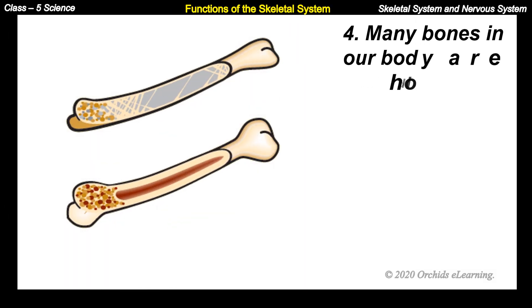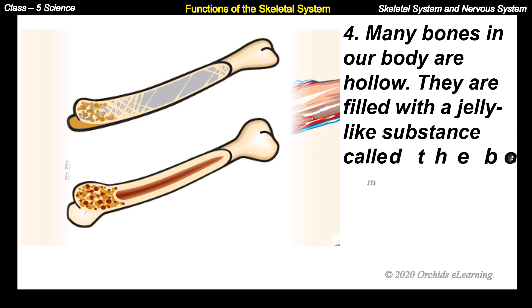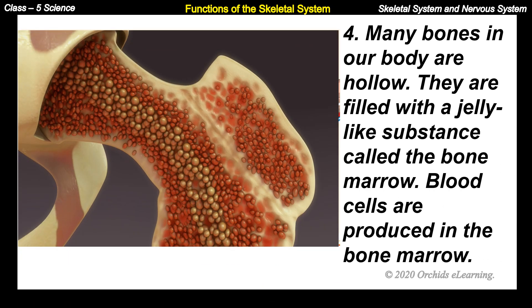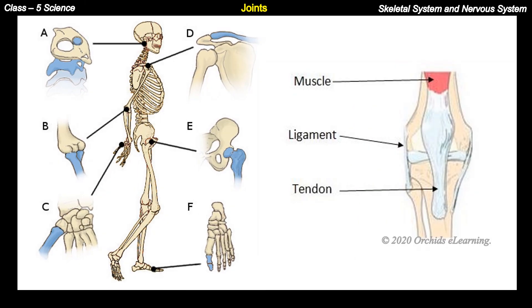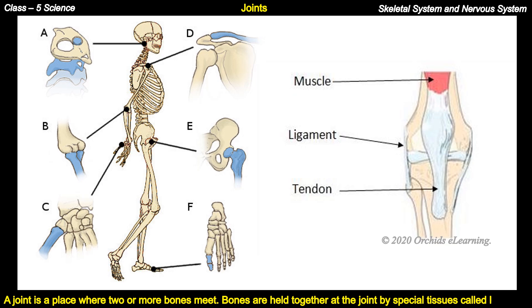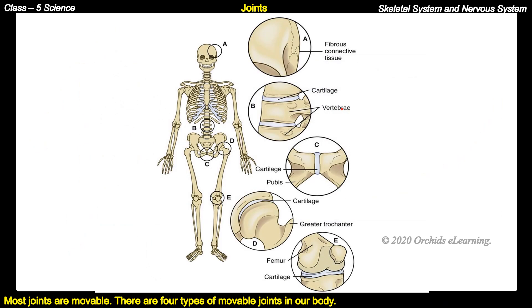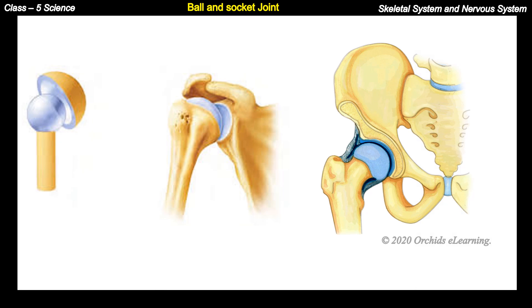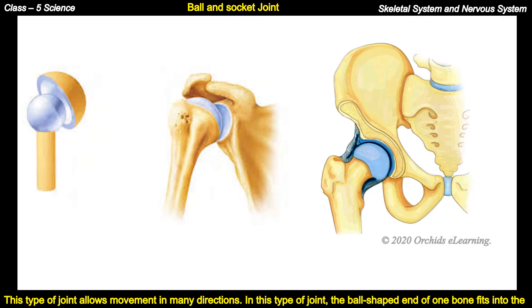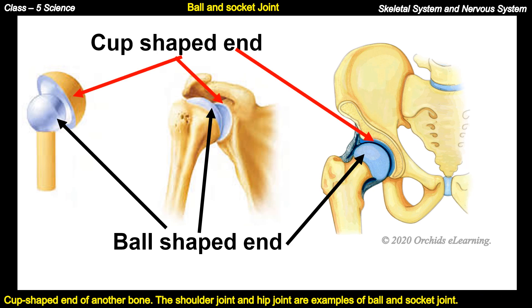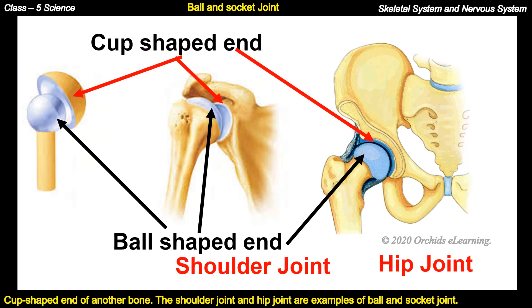Many bones in our body are hollow, filled with a jelly-like substance called bone marrow, where blood cells are produced. A joint is a place where two or more bones meet. Bones are held together at the joint by special tissues called ligaments. A tough elastic tissue called cartilage is also present on the surface of bones at the joints. Ball and socket joint: this allows movement in many directions. The ball-shaped end of one bone fits into the cup-shaped end of another. The shoulder joint and hip joint are examples.